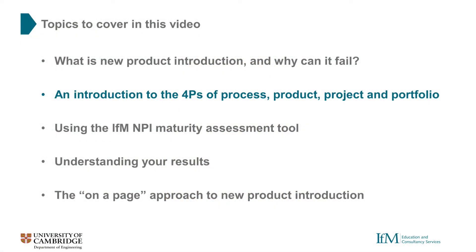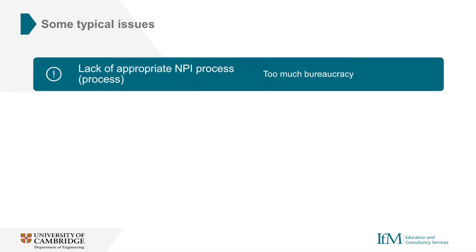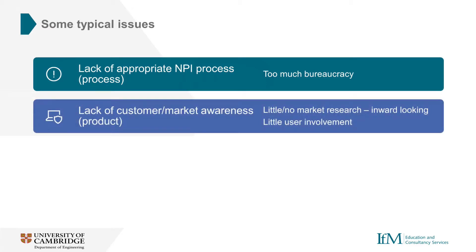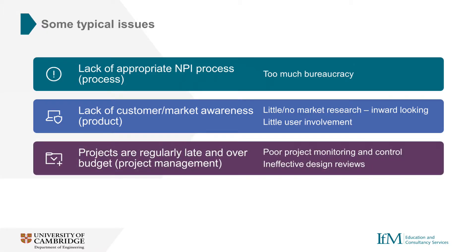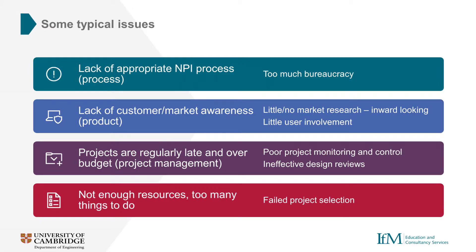A good way to avoid these issues and get your NPI process in order is to consider the four P's of process, product, project and portfolio. Research by Dr. James Moultrie at the IFM suggests that many new product introduction problems arise due to issues in four key areas: lack of an appropriate NPI process, for example too much bureaucracy; lack of customer or market awareness, perhaps because of too little market research or user involvement; projects that are regularly late and over budget due to poor project monitoring and control or ineffective design reviews; or not enough resources or too many things to do because of failed project selection. What we should be aiming for is a strategically prioritised portfolio containing multiple on-spec, on-time and on-budget projects, which follow a managed and fit-for-purpose NPI process and deliver products which the market really wants.